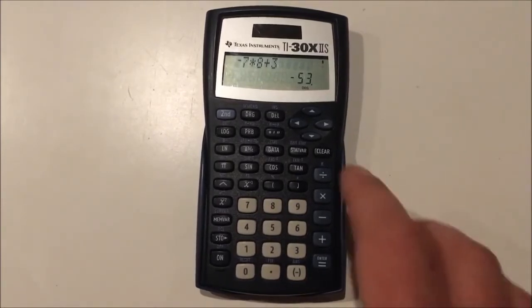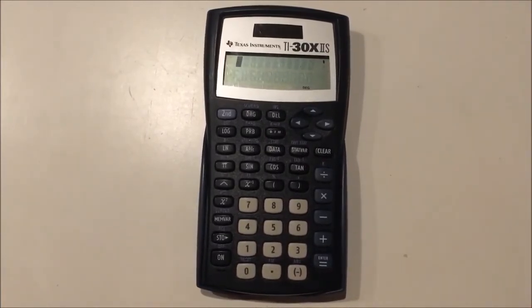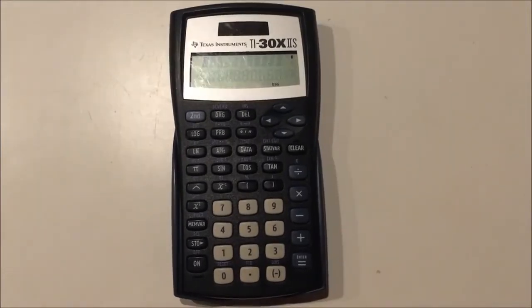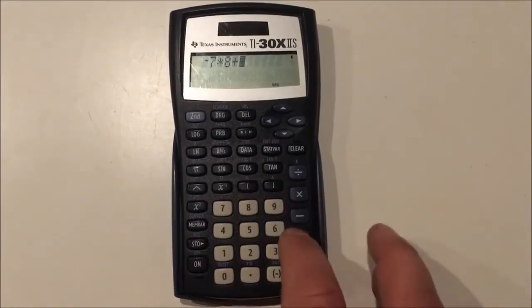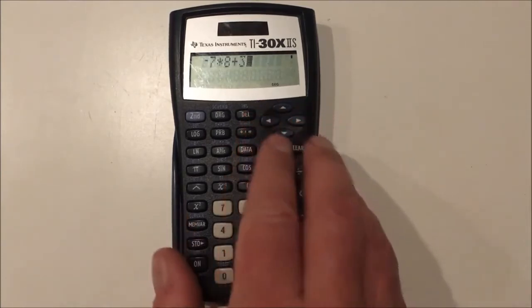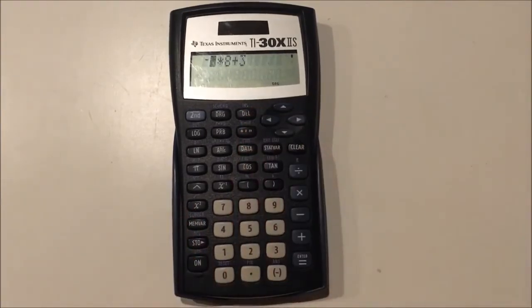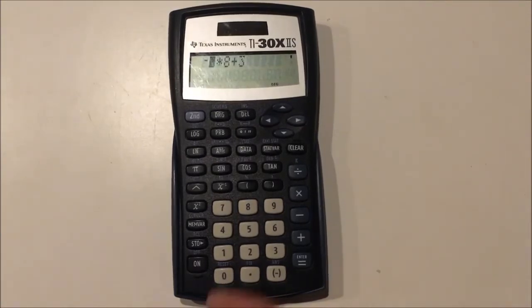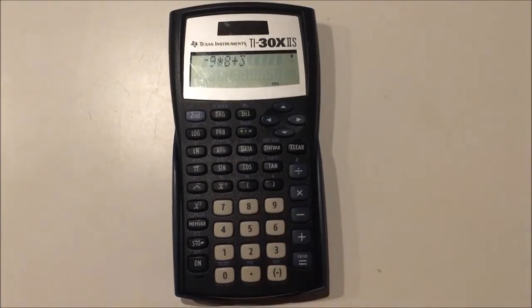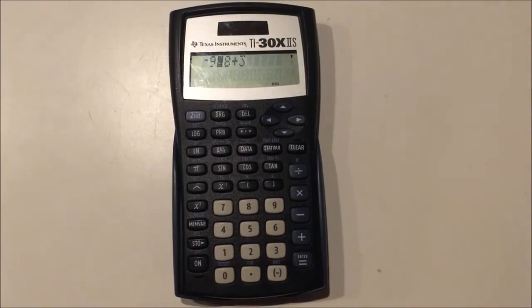Now to clear something from the screen we would press the clear button and it will revert back to the main screen. This calculator has a lot of features that allow you to edit your expression before you evaluate it. So let's say we type in negative 7 times 8 plus 3 and we want to edit our input expression. You can easily do that with these left and right arrows.